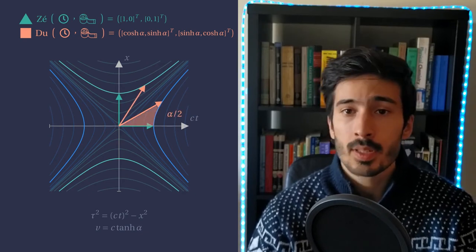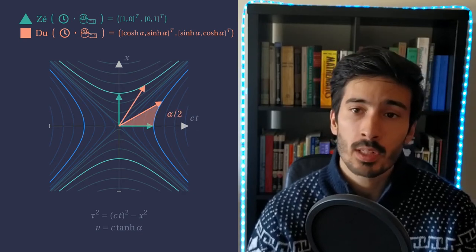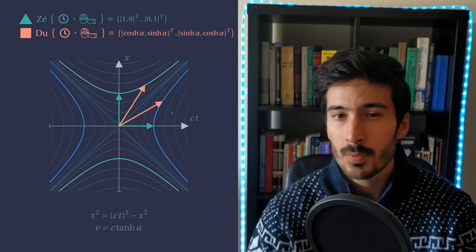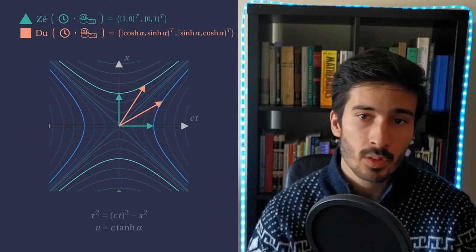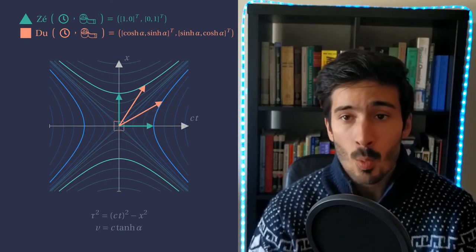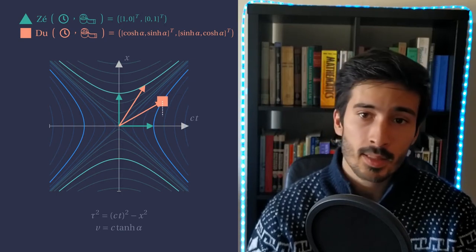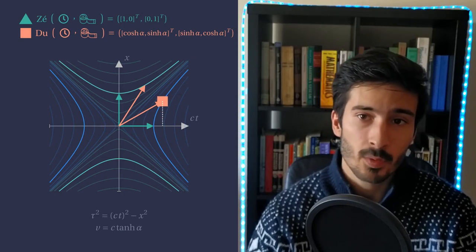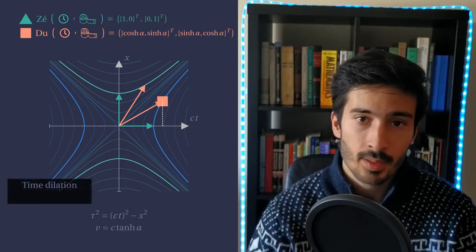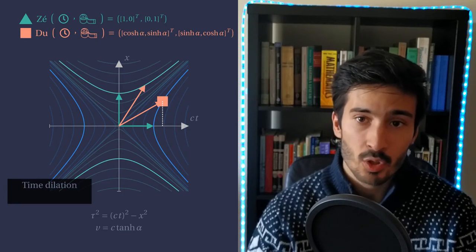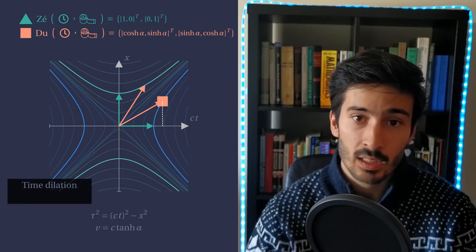We now repeat the same questions we posed for the Euclidean model of spacetime. If Du moves for one time unit measured in his own clock, what does Ze's clock show at that moment? Well, we can see that now the event occurred later for Ze, so time dilated. In Minkowski spacetime, the triangle inequality is actually the other way around.